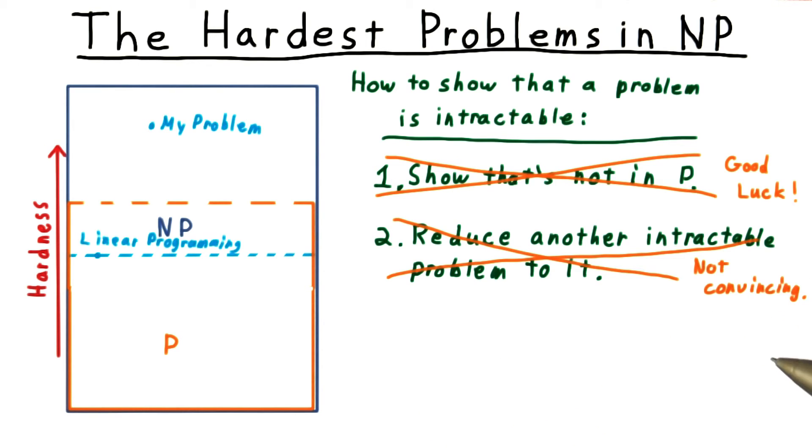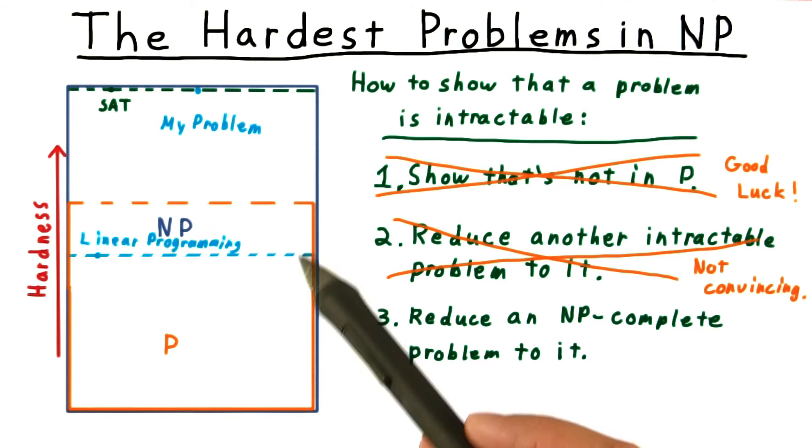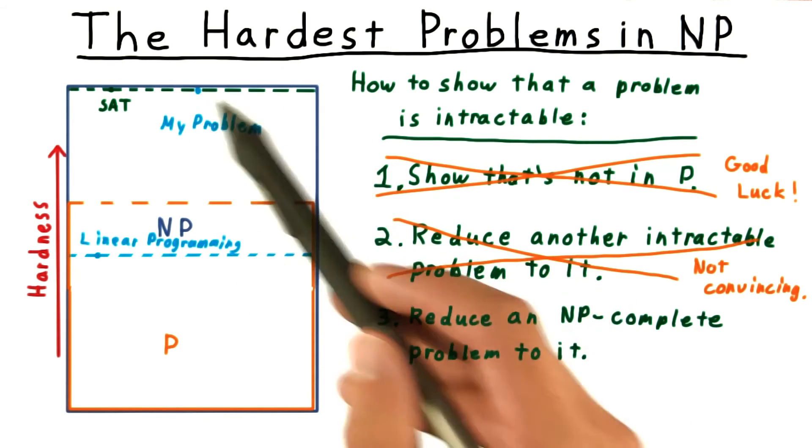This type of argument isn't worthless, but it's not as convincing as it might be. It would be much better to reduce your problem to a problem that we knew was one of the hardest in NP, so hard that if P were to swallow it, it would have had to have swallowed all of NP.